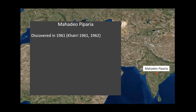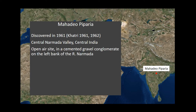With regards to Madhya Pipriya, it was discovered in 1961 by Dr. Kathri during his doctoral dissertation fieldwork, and it's located in the central Narmada Valley, a few kilometres upstream of Hatnora — the site of the only hominid fossil in the subcontinent from the Pleistocene — in a setting mostly of Acheulean or MOTU techno complexes. It's an open-air site in a cemented gravel conglomerate on the left bank of the river, primarily a secondary context site. Unfortunately there are no dates, absolute or relative, so that needs to be addressed.